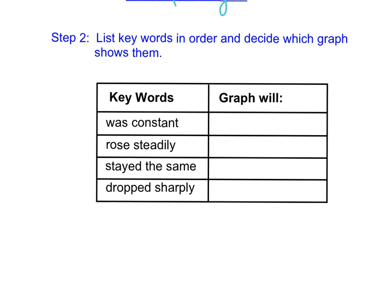Some keywords that we see in our descriptions of graphs: we see 'was constant'. When something is constant as time passes, that means the graph will be horizontal. It's just going to hold steady. It doesn't increase, and it does not decrease. When we see 'rose steadily', that means you will have an increase from the left to the right. So it's going to have a steady increase like that.